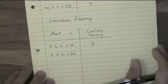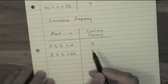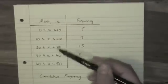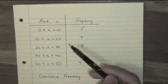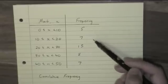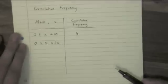Now the frequency that we have to fill in here is going to be all the people who got between 0 and 10 and all the people who got between 10 and 20. So you add these two numbers together, so 5 add 7 is 12.